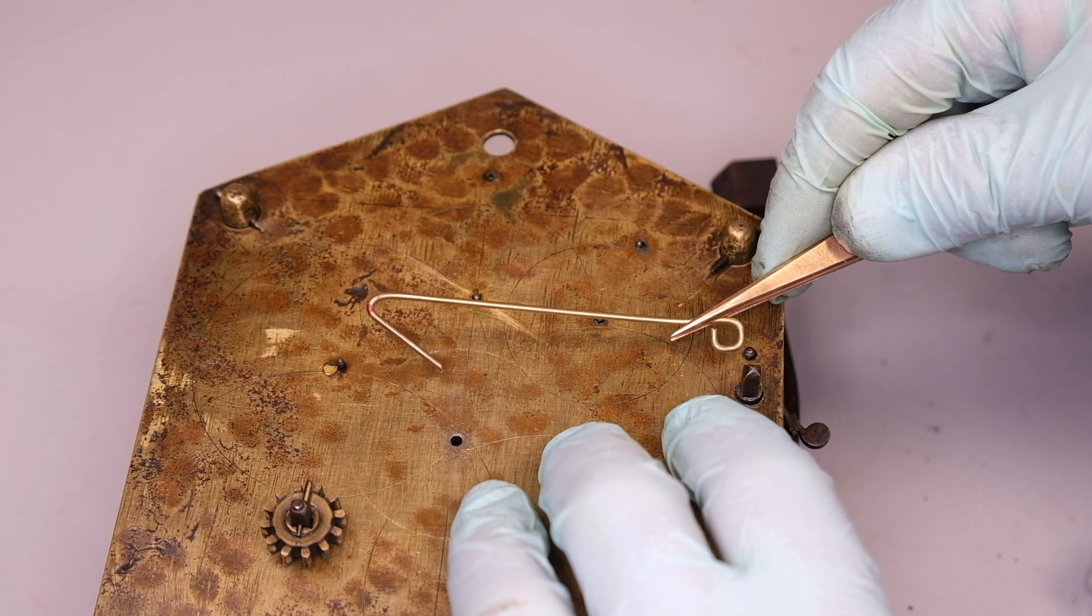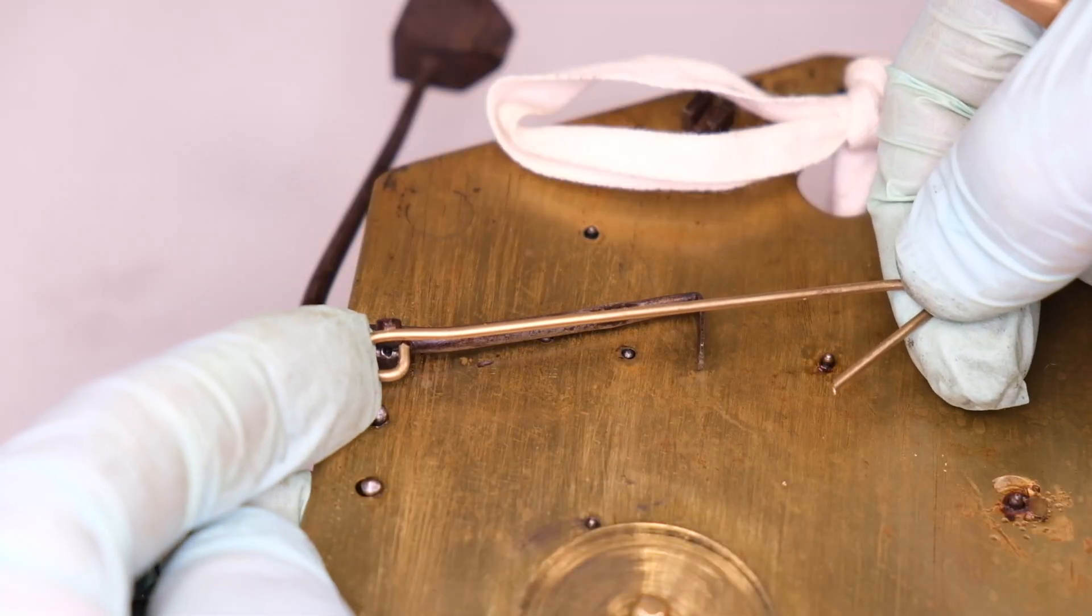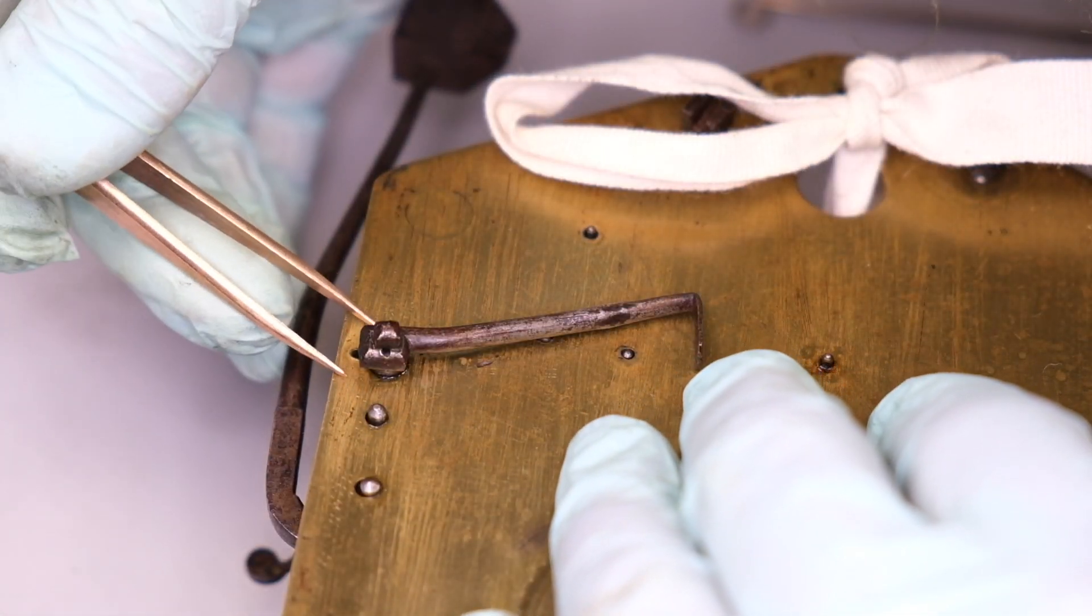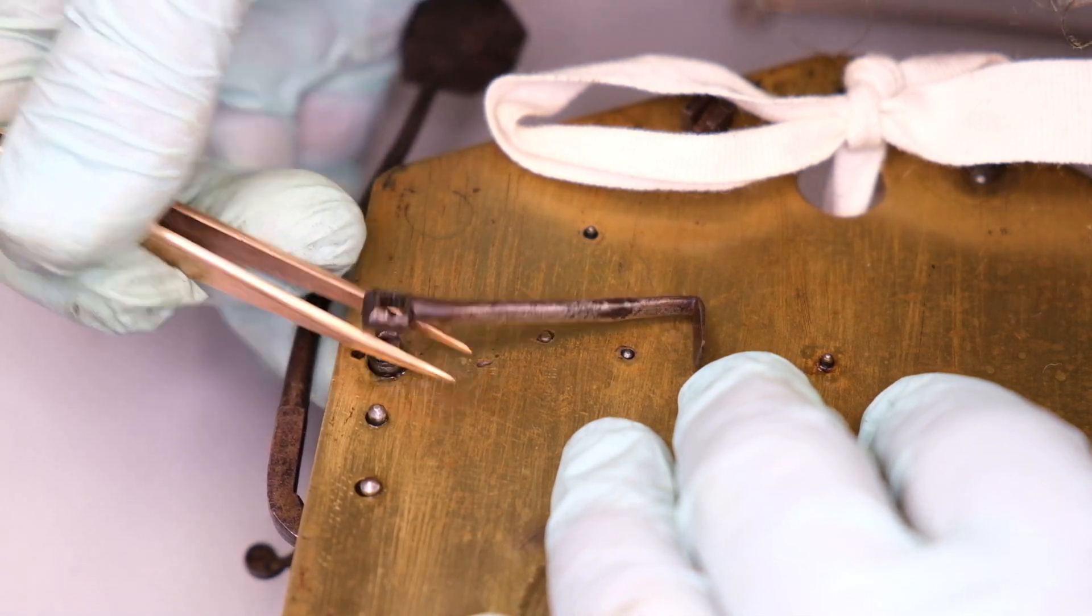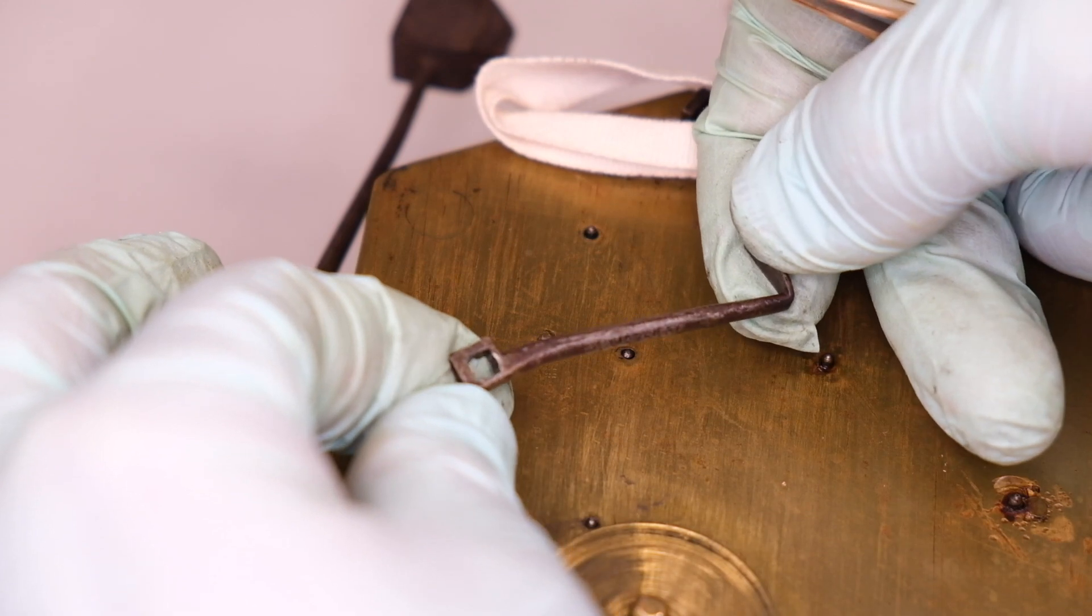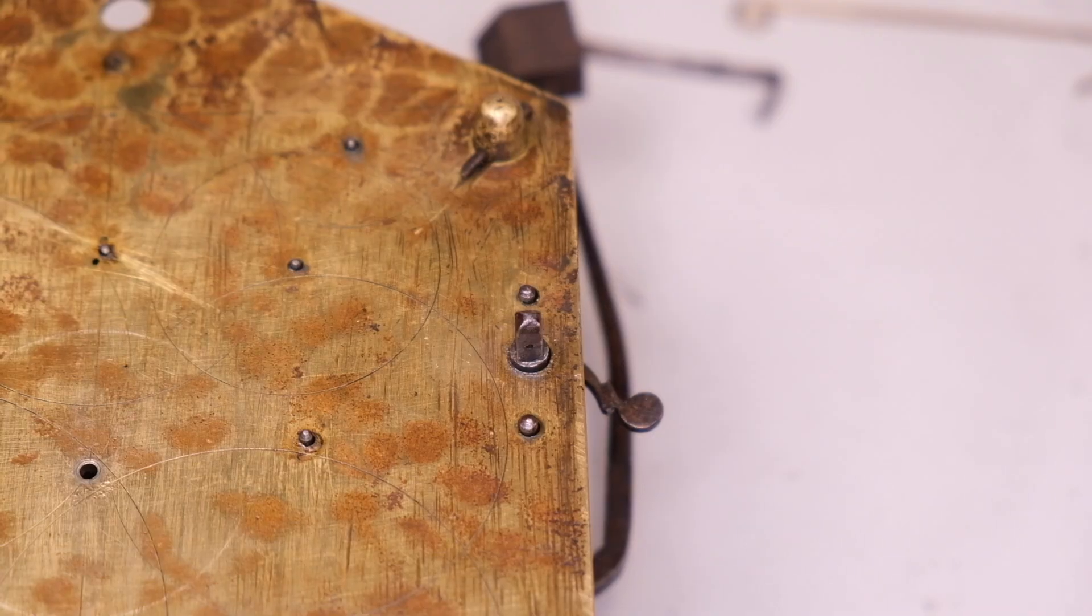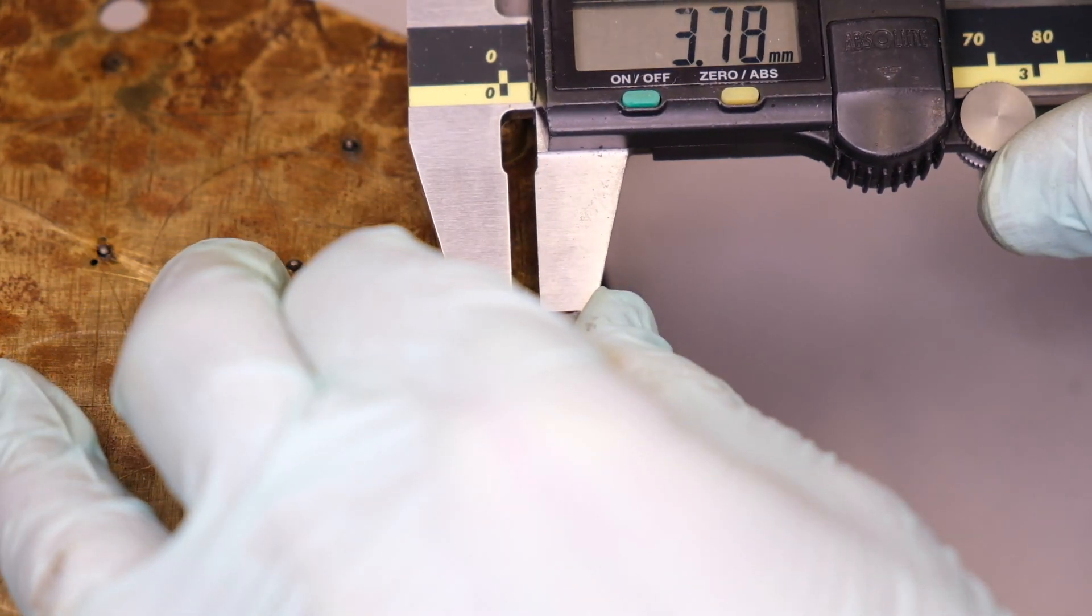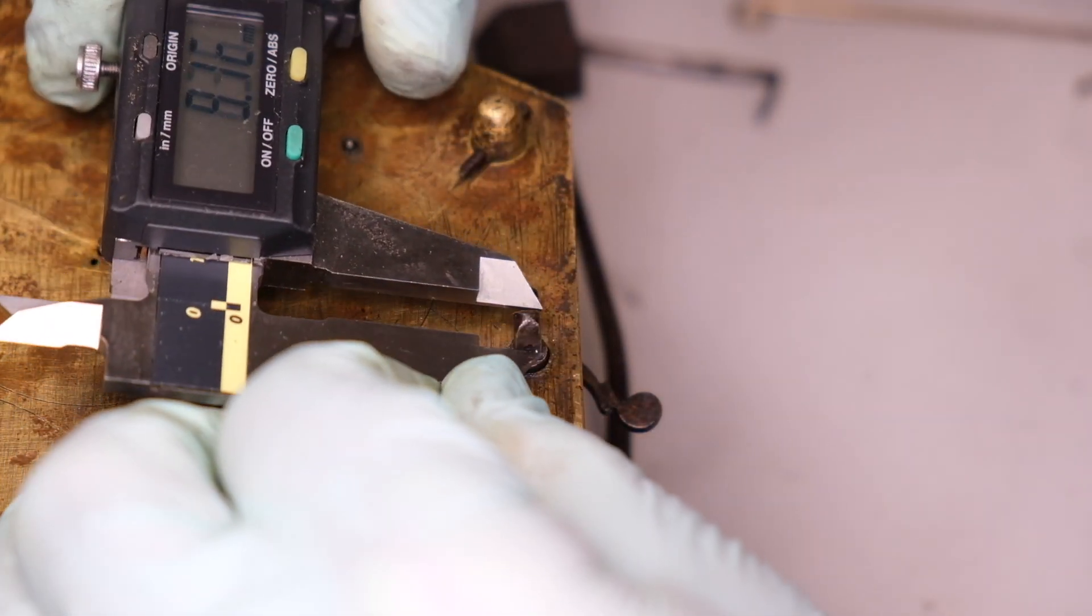So we've got our prototype. Now it's time to turn it into a steel or iron final piece. Now what we've got here on the back of the clock movement is the count wheel detent, which is forged. I'm not going to forge the lifting piece, but I'm going to use the count wheel detent as a guide, a style guide.